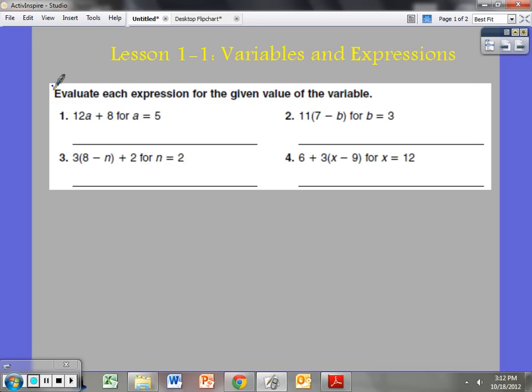Here I see the word evaluate. It says evaluate each expression for the given value of the variable. Here I see 12a + 8 for a = 5. Originally I did not know what the variable a was, but now I know that it's worth 5. We call this 12 the coefficient because we are multiplying it by an unknown. So now instead of being 12 times a, we know that a is equal to 5. So we go 12 times 5. I'm going to put the 5 in parentheses which is a way to show multiplication. 12 times 5 plus 8.